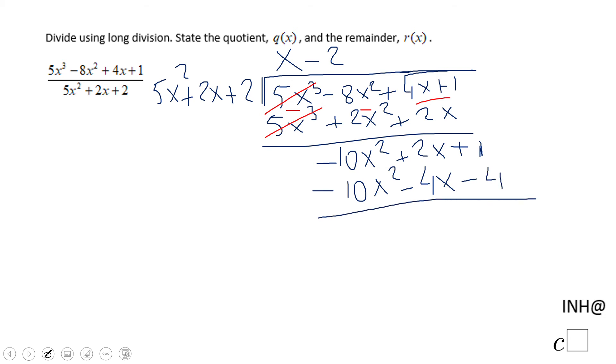My next step will be to subtract. And if you notice, these two terms cancel out, like always. Now we have positive 2x minus negative 4x. That will be positive 6x. Positive 1 minus negative 4. That will be positive 5. And that's it.